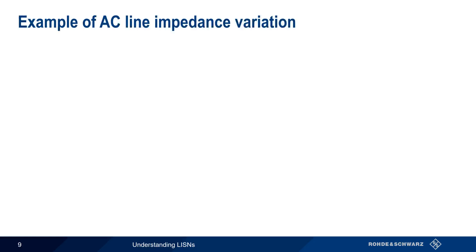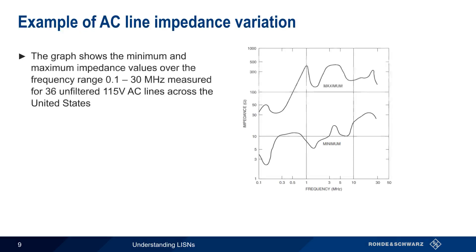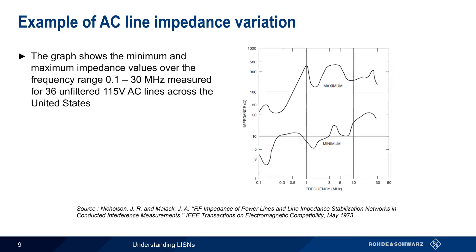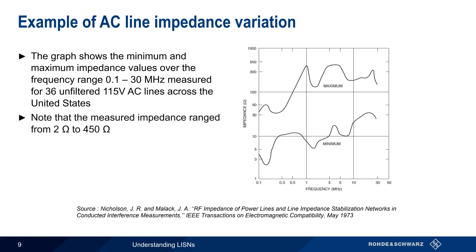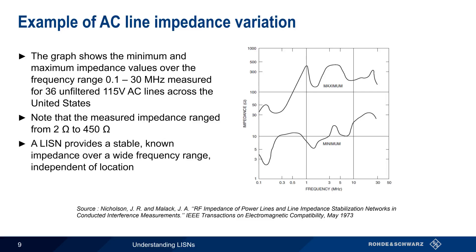If you're wondering how much the impedance of an AC outlet varies from place to place, this graph shows the maximum and minimum impedance values at 36 unfiltered outlets across the United States. Note that the impedance varied from a minimum of about 2 ohms to over 450 ohms over the frequency range used for most conducted emissions testing. This shows why a LISN is helpful in ensuring that a stable, known impedance is present regardless of location.